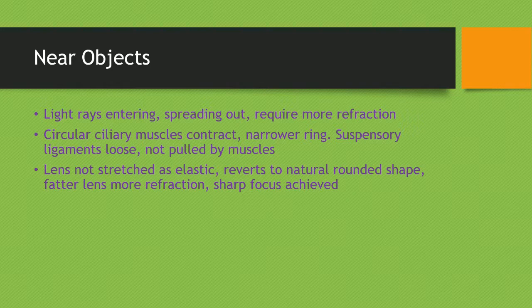When looking at near objects, light rays spread out and require more refraction. The circular ciliary muscles contract, the ring becomes narrower, and the suspensory ligaments become loose — they are no longer pulled by the muscles. Because the lens is elastic it reverts to its natural rounded shape, meaning the fatter lens produces more refraction and a sharp focus is achieved. In summary: for near objects, ciliary muscles contract → suspensory ligaments are loose → lens adopts its natural rounded shape.